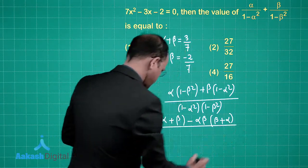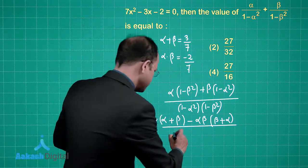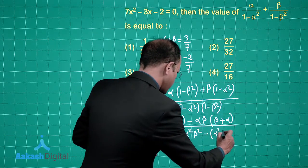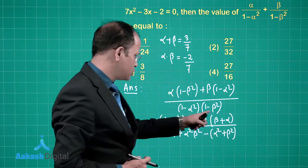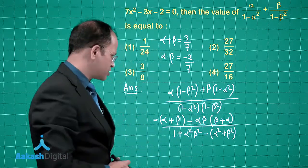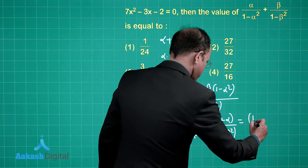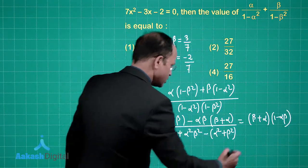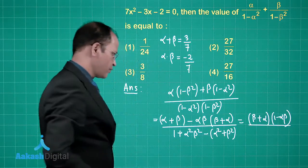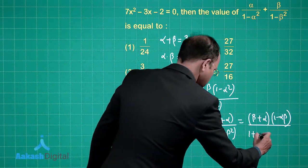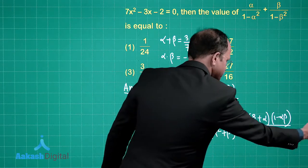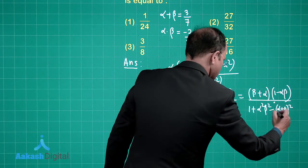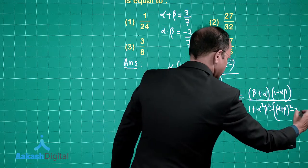For the denominator, expanding (1-α²)(1-β²) gives 1 - α² - β² + α²β². We rewrite (α²+β²) as (α+β)² - 2αβ, so the denominator becomes 1 + (αβ)² - [(α+β)² - 2αβ].